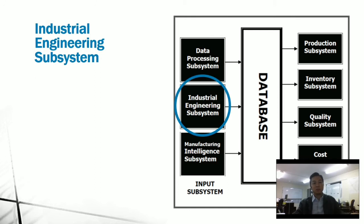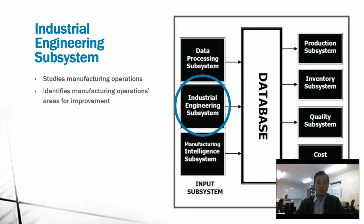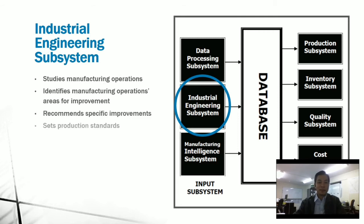The next subsystem is the industrial engineering subsystem. This subsystem is capable of studying manufacturing operations. It identifies manufacturing operations areas for improvement and recommends specific improvements for those areas. Lastly, it sets production standards in an organization. By setting production standards, they look into the production process and determine how long a process should actually take. These performance standards are stored in a database, and together with actual performance, unusually large differences between actual and expected performance are reported to management.